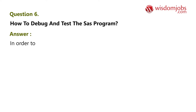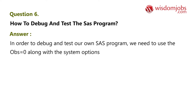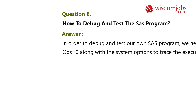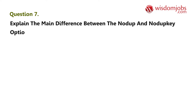Question 6: How do you debug and test a SAS program? Answer: In order to debug and test a SAS program, we need to use the obs=0 option along with the system options to trace the executed program.